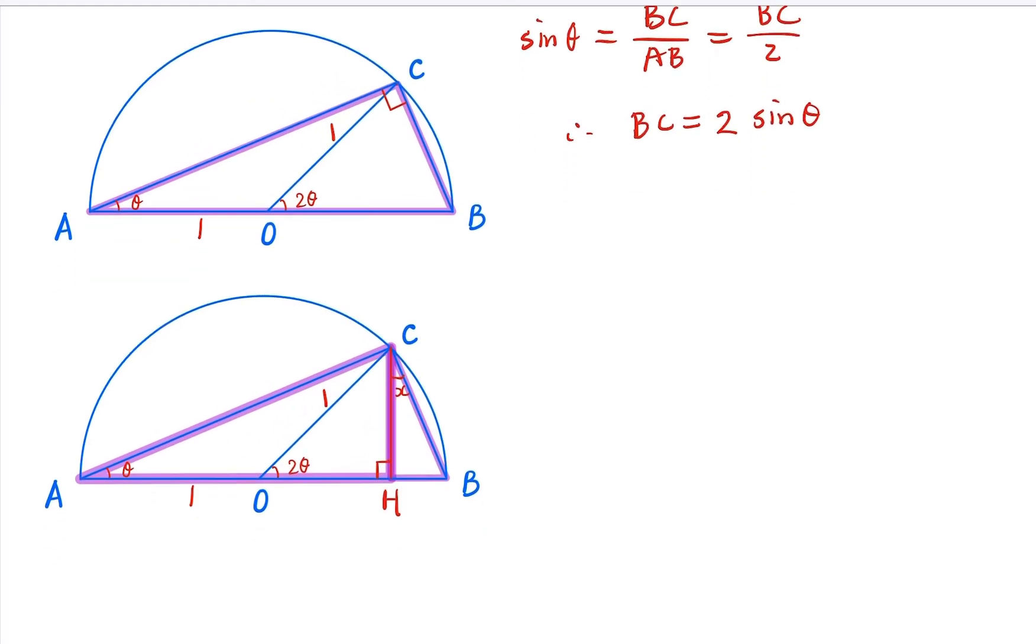Now, in this new diagram, we have sine 2θ here. So sine 2θ is going to equal, by definition, CH over the radius 1, which is CH.